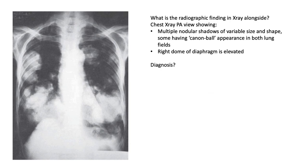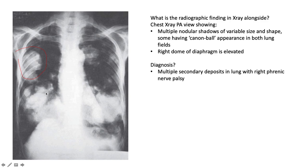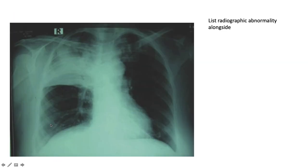Here we have multiple nodular shadows of variable size and shape with a cannonball appearance, with the right dome of the diaphragm elevated — speaking to multiple secondary deposits in the lung with right phrenic nerve involvement.